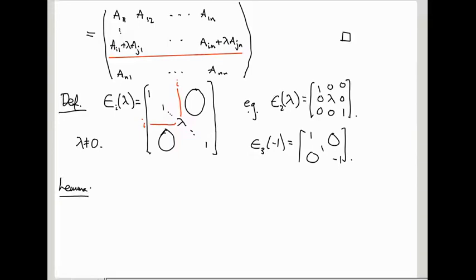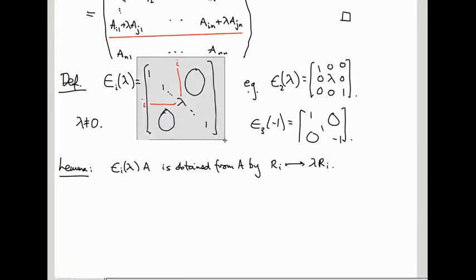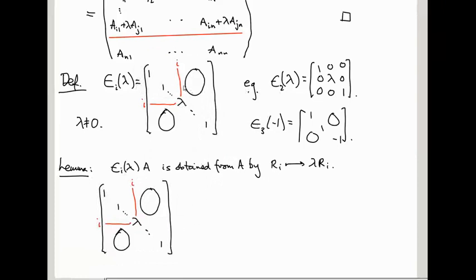And indeed here's the lemma. As before, if we have A and we multiply it by E_i(λ), if they're the same size so this makes sense, this is obtained from A by R_i goes to lambda R_i. And again we can just multiply out the matrices to see why this is true. Here's our elementary matrix. Let's multiply it into A. I'm going to need to keep track of row i, so let's stick a_i1 here, a_in here.